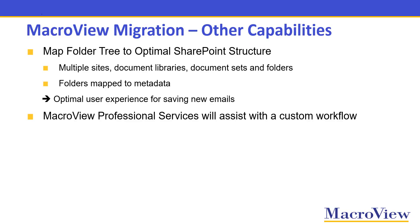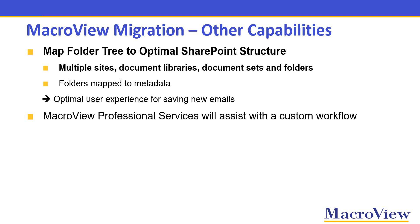We've seen the basic operation of MacroView Migration, which is to replicate an existing public folder tree as a tree of folders in SharePoint. MacroView Migration can also map the folder tree to a different structure in SharePoint — for example, one containing multiple sites, document libraries, document sets, and folders, where some of the folder names are mapped as metadata automatically as part of the migration.